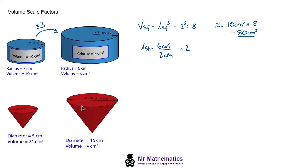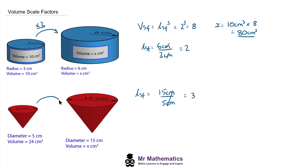Moving on to the similar cones, we've been told that the diameter of the smaller cone is 5 centimeters and the diameter of the larger cone is 15 centimeters. We use these corresponding lengths to work out the length scale factor: 15 divided by 5 is 3. So the larger cone is 3 times bigger in terms of its length. The volume scale factor will be 3 cubed, which is 27.